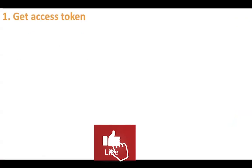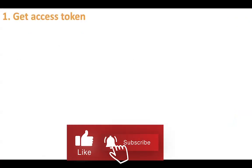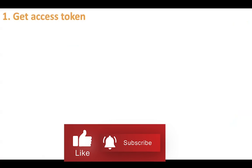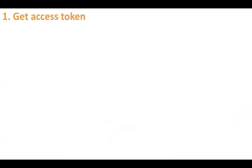To call the SharePoint API, you need to generate the access token. To get the access token, we need certain details that we have seen in our previous videos — how to generate the client ID and client secret and how to give permission. So we are going to use the same client ID, client secret, tenant ID, and resource ID to generate the access token.